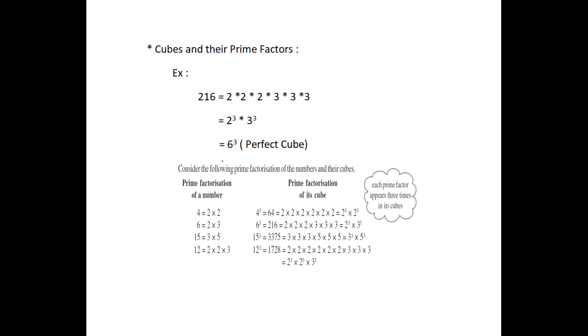For example, 216. Prime factorization of 216 equals 2 into 2 into 2 into 3 into 3 into 3 which equals 2 cube into 3 cube which equals 6 cube which is a perfect cube.